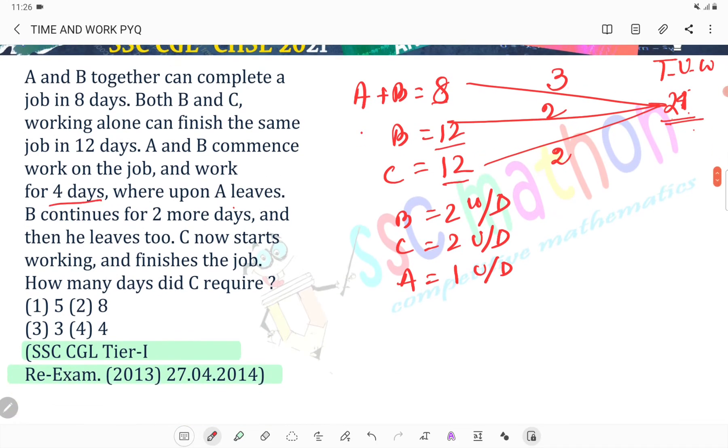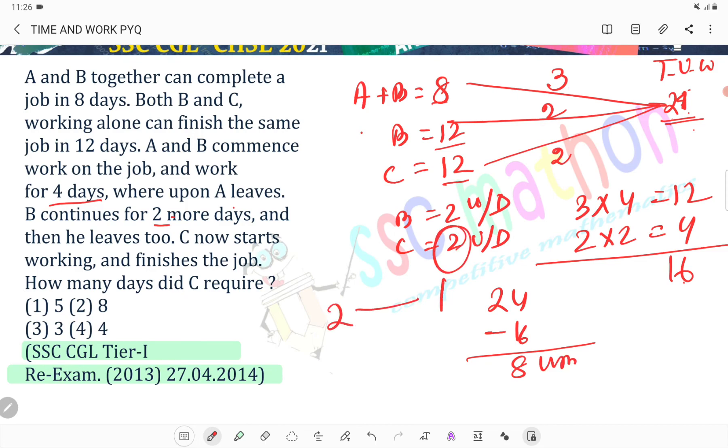A is 1 unit per day. So A and B work for 4 days to complete 12 units. B works 2 more days at 2 units per day, that's 4 units. Total is 16 units. Remaining is 8 units. C works at 2 units per day, so 8 divided by 2 equals 4 days.